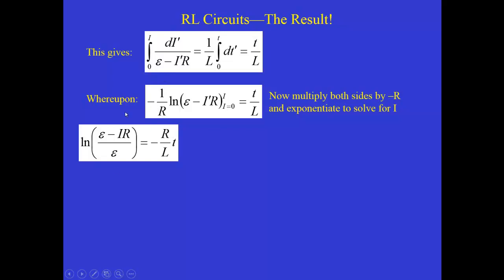And then I've combined steps here by multiplying both sides by negative R to get rid of the negative one over R. So once you simplify, you get this expression. Now we want to solve for i. So we have to dig the i out from inside the natural log. So we exponentiate both sides, e to the power of both sides.